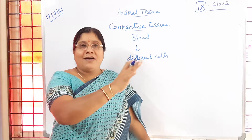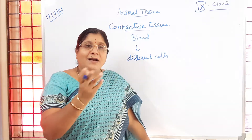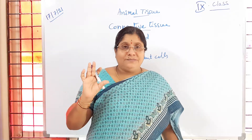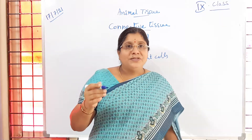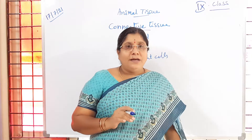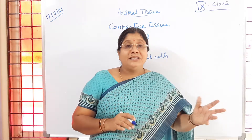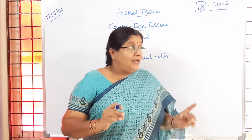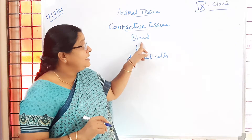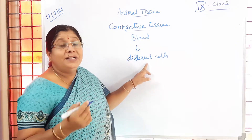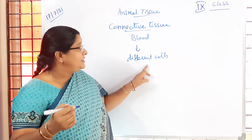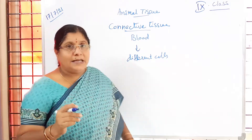Whereas if you take cartilage, tendon, or ligament, they perform one function. Adipose tissue stores fat, areolar tissue provides framework. But in blood, the different blood cells present are doing different functions - various functions are carried out by the different blood cells.